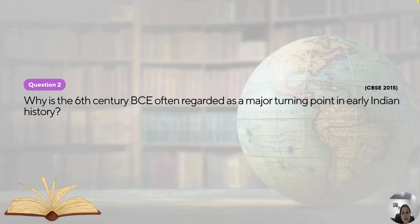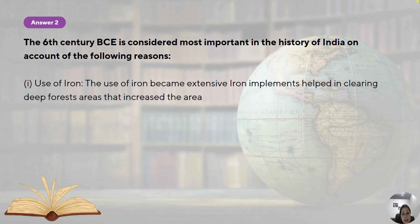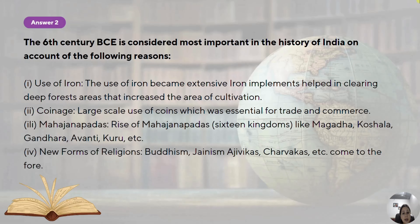Moving on to question number two, a very important question: why is the 6th century BC often regarded as a major turning point in early Indian history? This chapter covers the period from 6th century BC to 6th century CE. The first reason is the use of iron, the coming up of the coinage system, the rise of Mahajanapadas, and the coming up of new forms of religions.